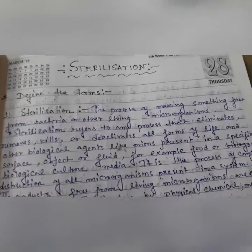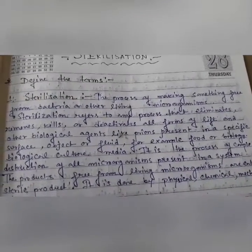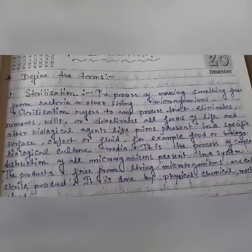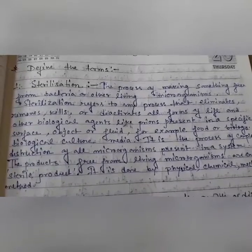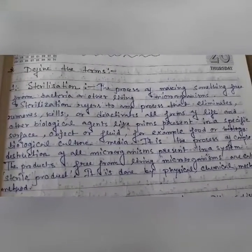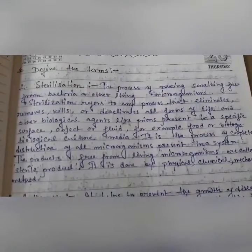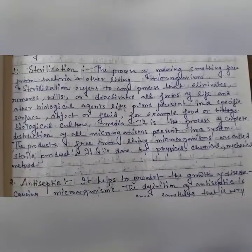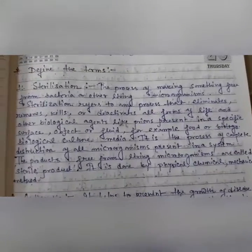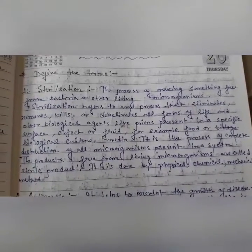The first definition: what do you mean by sterilization? It is the process of making something free from bacteria or other living microorganisms. Sterilization refers to any process that eliminates, removes, kills or deactivates all forms of life and other biological agents present in specific sources, objects or fluid — for example, food or biological culture medium. It is the process of complete destruction of all microorganisms present in a system. Products free from living microorganisms are called sterile products. It is done by physical, mechanical and chemical methods.